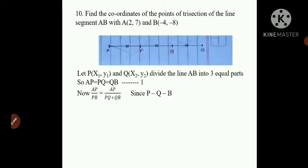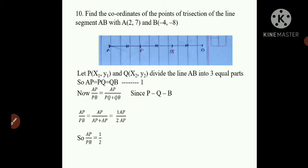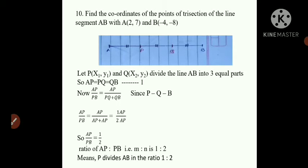To find the ratio, we compute AP/PB. PB contains point Q, so PB = PQ + QB. Since AP = PQ = QB from statement 1, AP/PB = AP / (AP + AP) = AP / 2AP = 1/2. So the ratio AP:PB = 1:2, meaning point P divides the segment in the ratio 1:2.